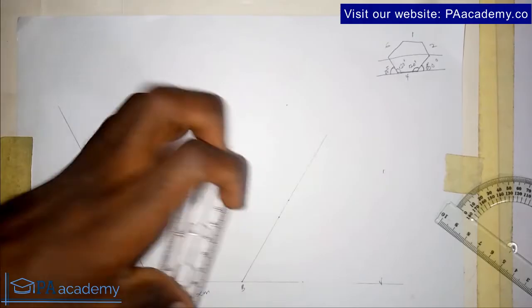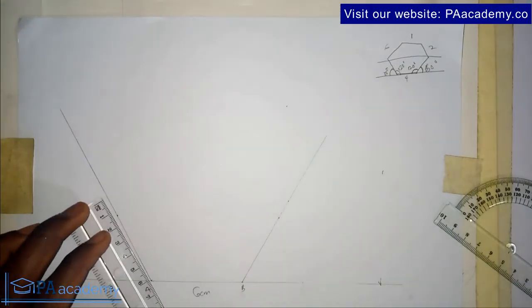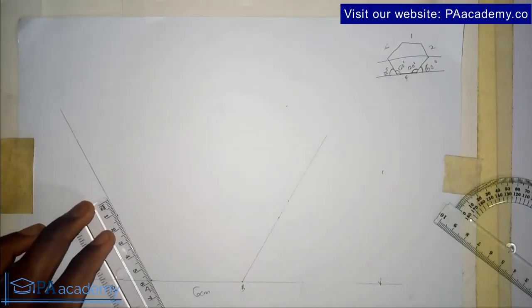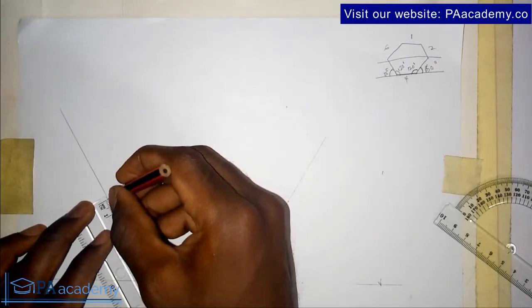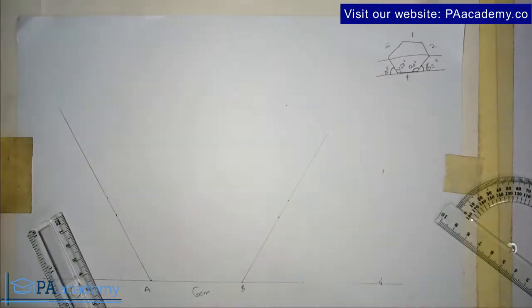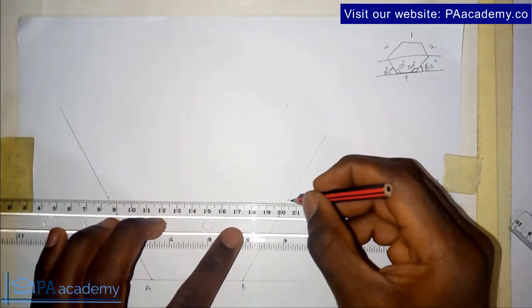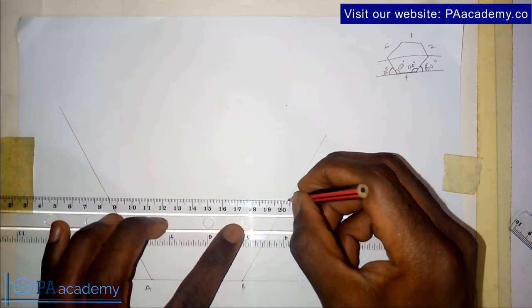This point is the 6 centimeter, so this point is the 6 centimeter, and this is my 6 centimeter. What I'll do is just draw a construction line, a thin line, to join these two points.